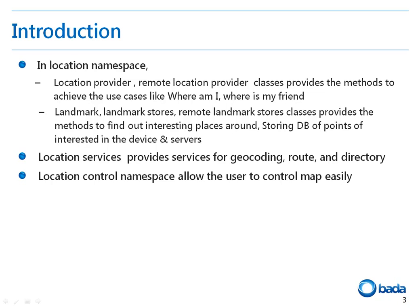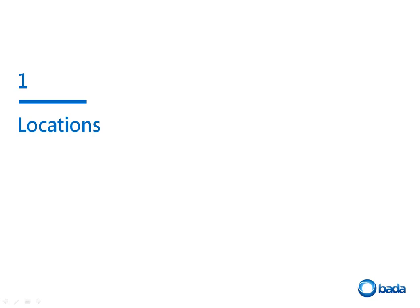We will discuss the Location namespace, focusing mainly on location-based services such as the Location Provider and Remote Location Provider classes, which provide the methods to achieve use cases such as 'Where am I?' or 'Where is my friend?' The Landmark, Landmark Store, and Remote Landmark Store classes provide methods to find interesting places nearby and store a database of points of interest on the device and servers. Location Services provide services such as maps, geocoding, routing, and directory, and the Location Control allows users to control the map more easily.